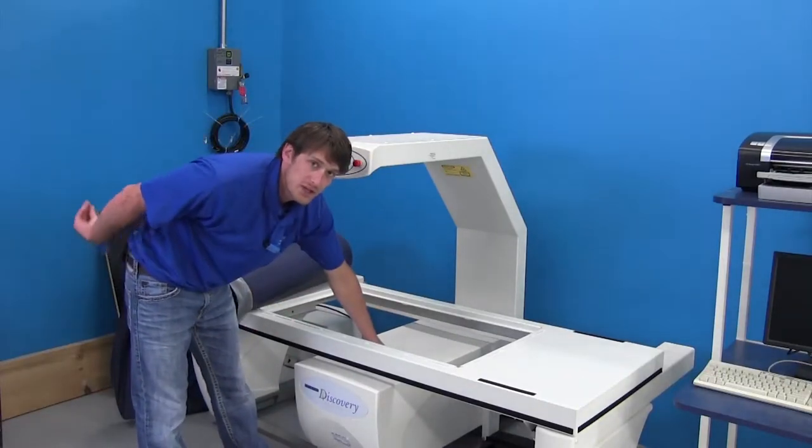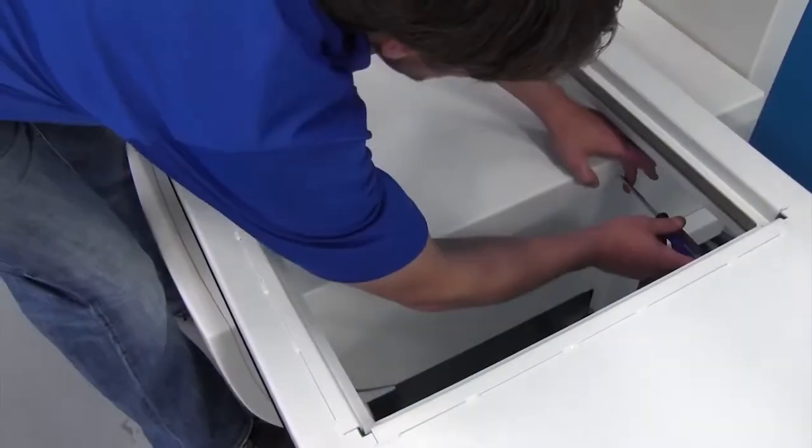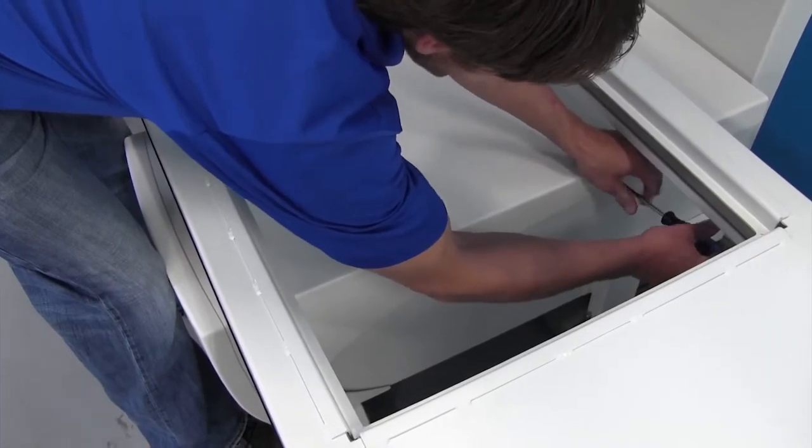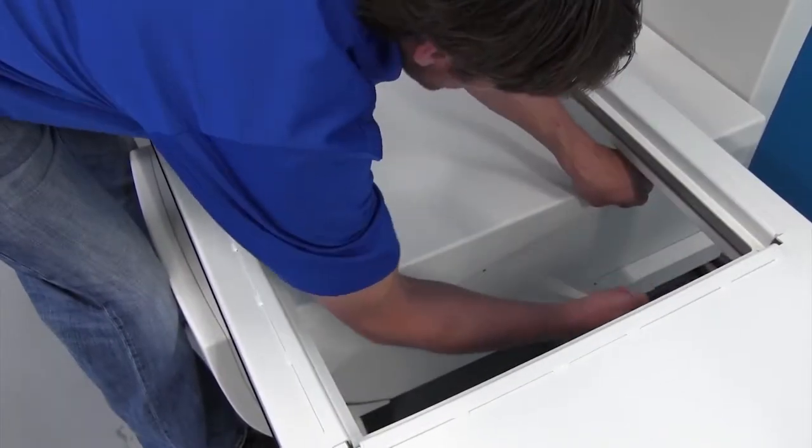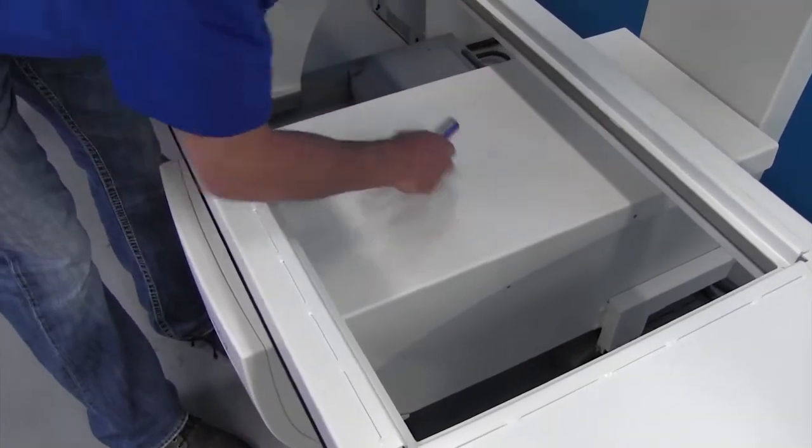First you have to remove the plastic cover on top. There are two screws on each side to remove those. Just a regular screwdriver is used to remove these screws. Very simply, again, one on each side. I've already removed the one on this side for you.